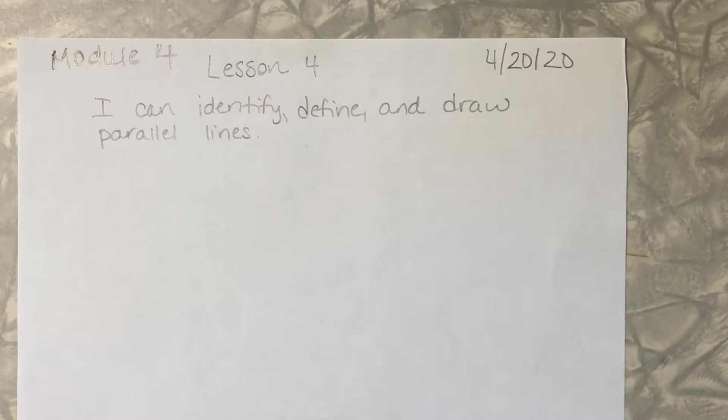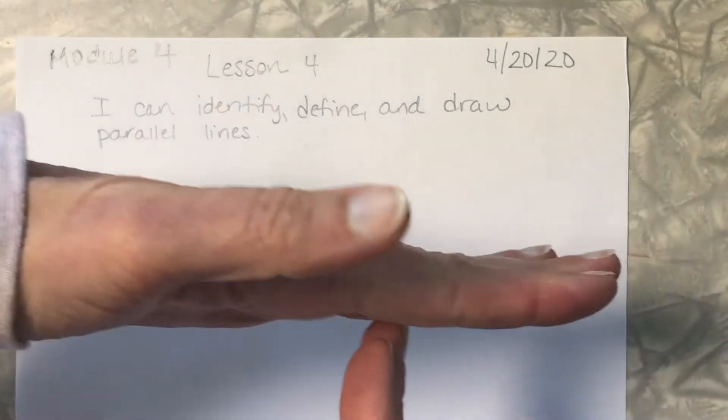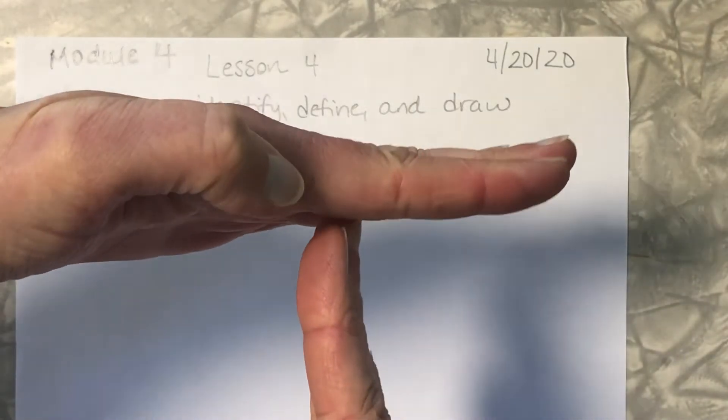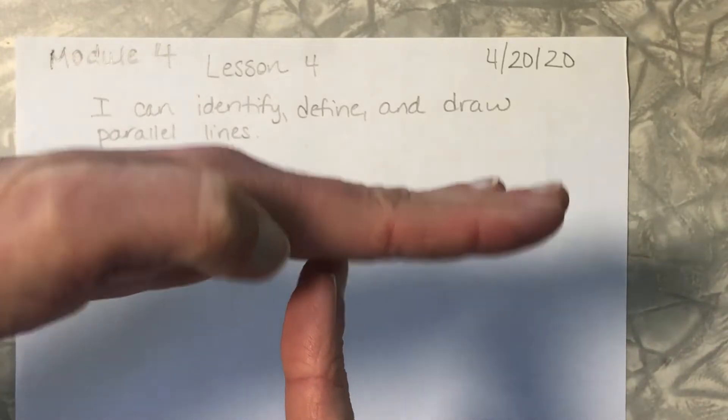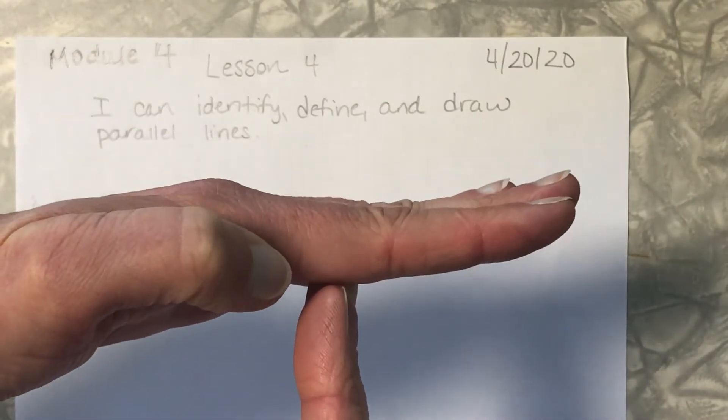Now last week we learned about perpendicular lines. Perpendicular lines are lines that intersect and form right angles. So these are special kinds of lines that intersect and form right angles.